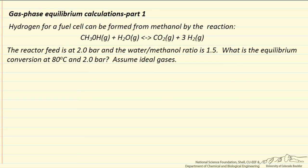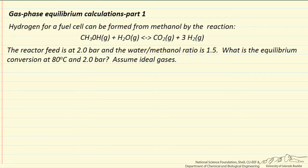In this example, we're going to calculate the equilibrium conversion for a gas phase reaction of methanol and water reacting to carbon dioxide and hydrogen. The reaction is at 2 bar, and the water to methanol ratio is 1.5 coming into the reactor. The question is: what's the equilibrium conversion at 80 degrees C, assuming ideal gases?